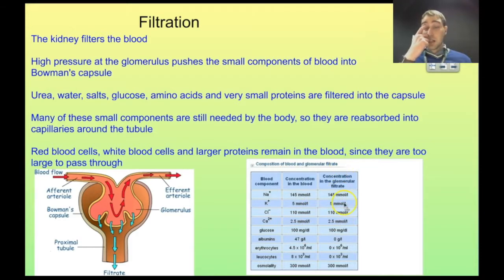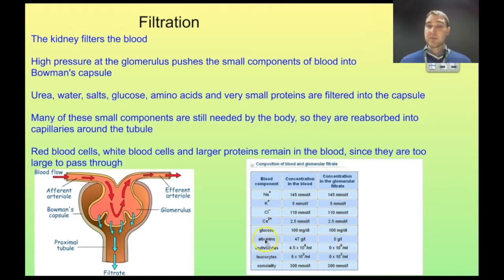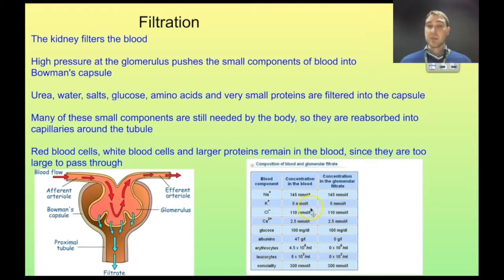Looking at the comparison between what's in the blood and what's in the filtrate: salt ions are about the same in both because they're being pushed out. Glucose is also the same on both sides as it's getting filtered out. Albumin is a big protein that shouldn't make it through, so we have some albumin on the blood side and none in the filtrate. White and red blood cells also shouldn't be pushed through. Osmolality — a measure of the concentration of salts in water — is the same on both sides.